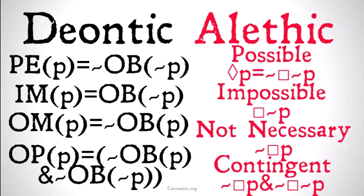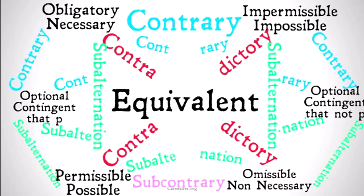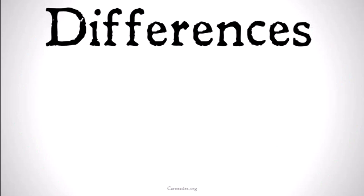The point is that these two types of concepts map onto each other very well, and some of the same rules that apply to possibility and necessity are going to apply to obligations and permissibility. In fact, they both fit nicely into our deontic hexagon — it could just as easily be an alethic modal logic hexagon.